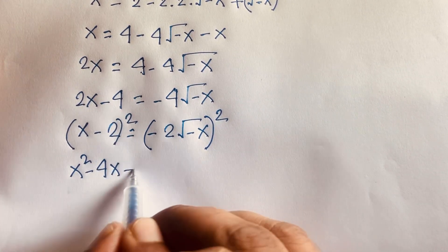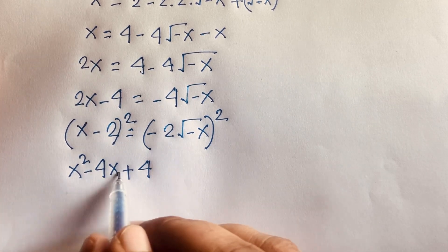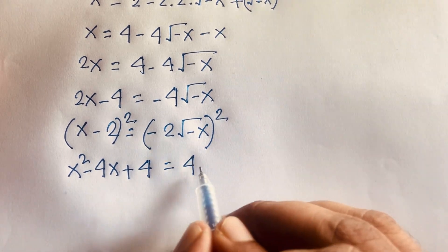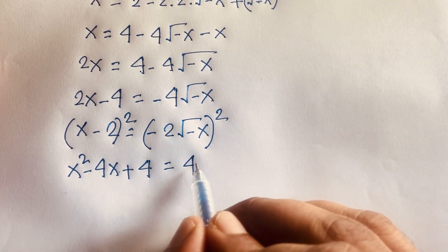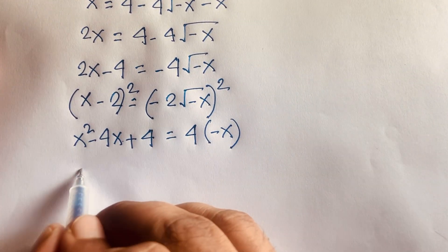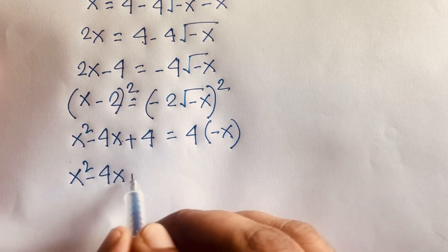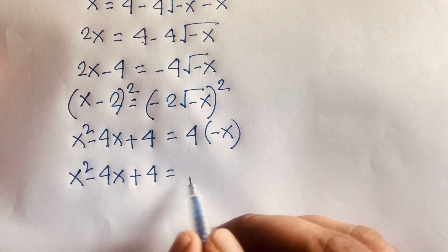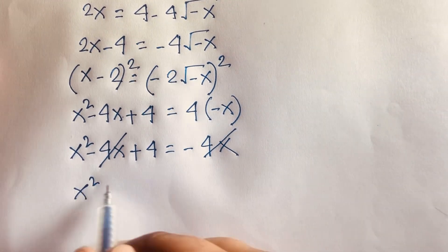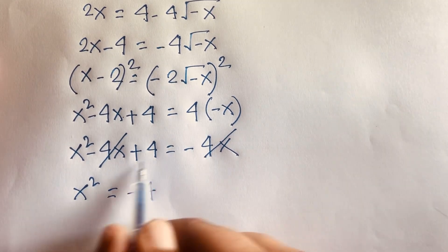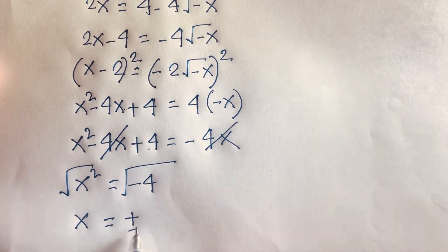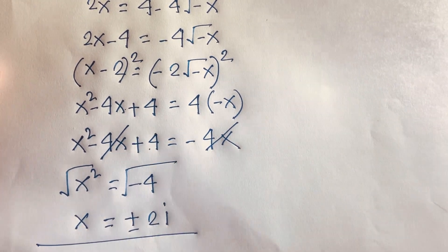Expanding the left side using (a - b)²: x² minus 4x plus 4. The right side: negative 2 squared is 4, and the square root cancels, giving negative 4x. The 4x terms cancel, leaving x² equals negative 4. Taking the square root of both sides, x equals plus or minus 2i. This is our final answer.